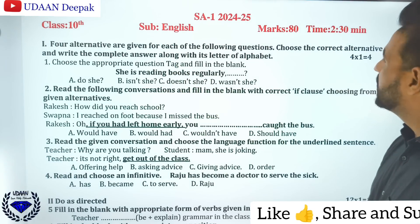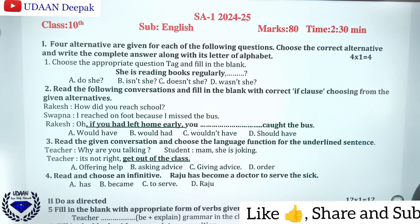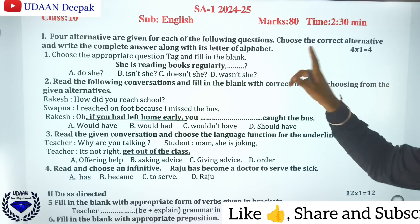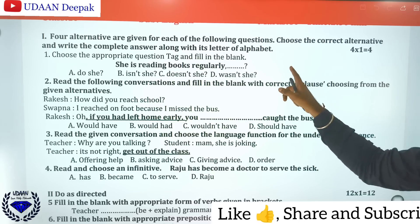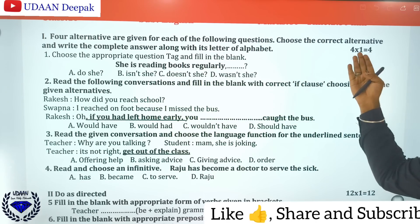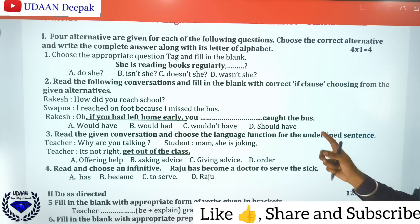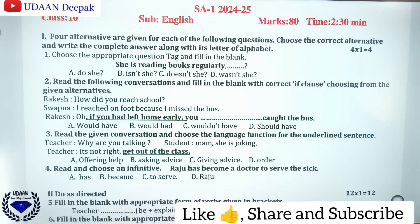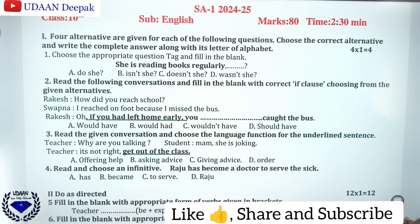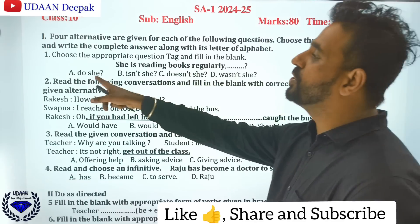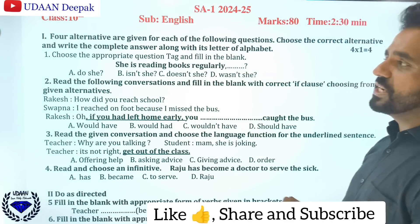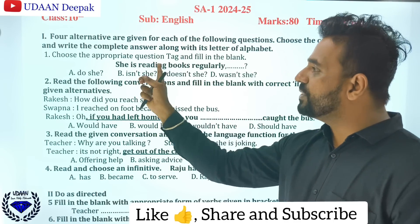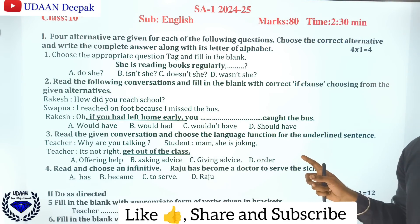The first four marks are objective based questions. Four alternatives are given for each question. You should choose the correct alternative and write the complete answer along with its letter of alphabet. The first question is: 'She is reading books regularly.' Since 'is' is an auxiliary verb, the negative form is the answer — that is option B.